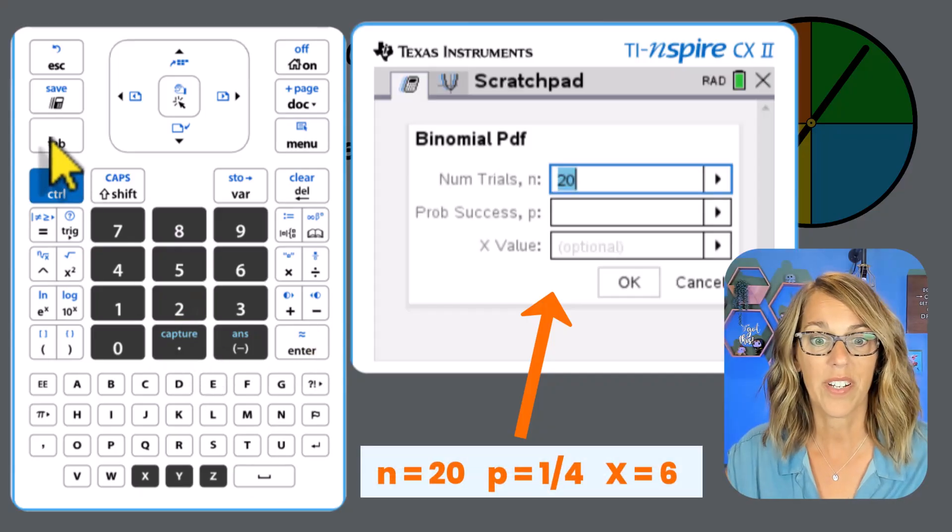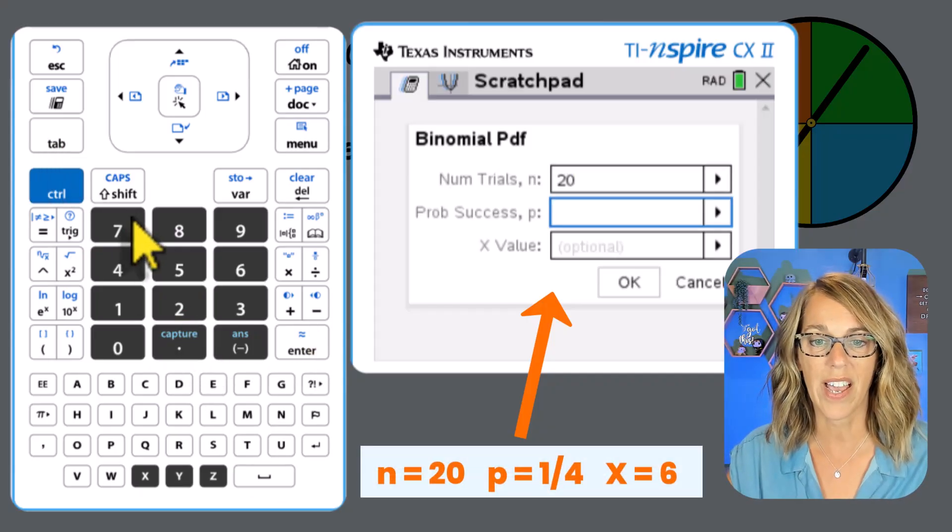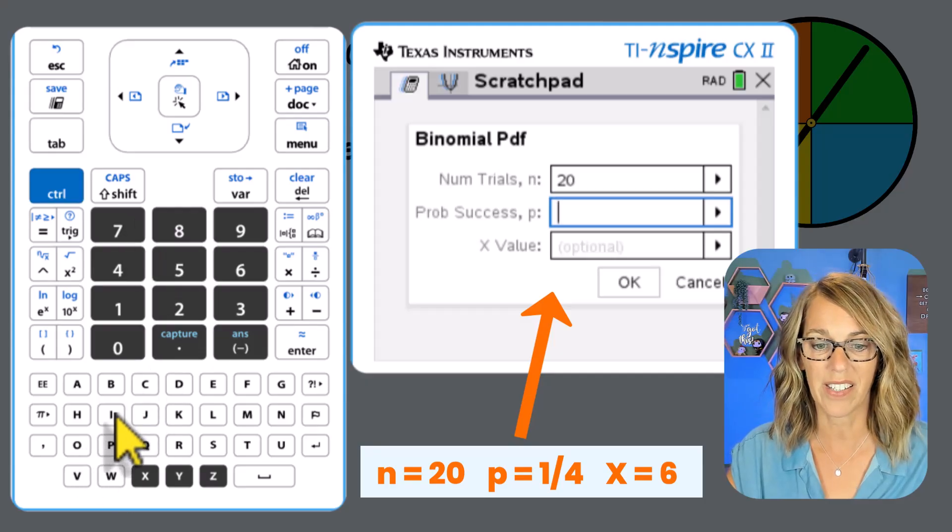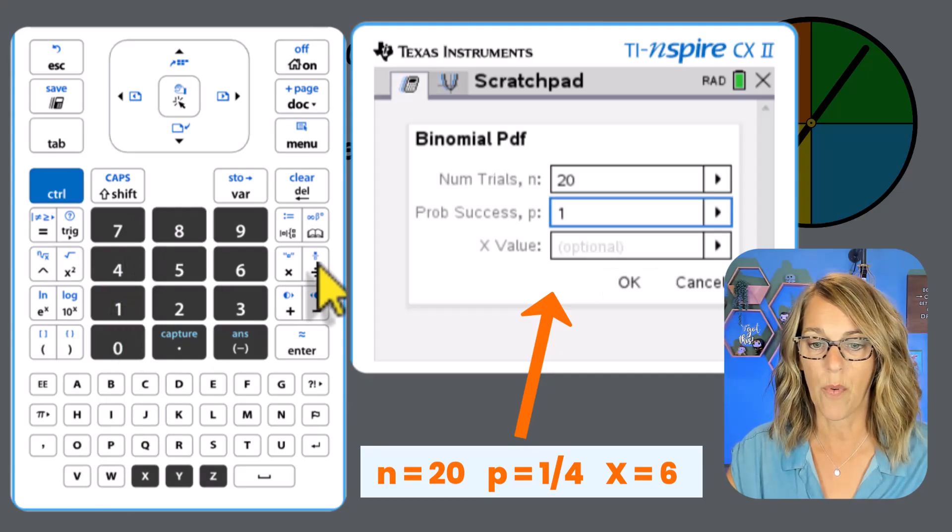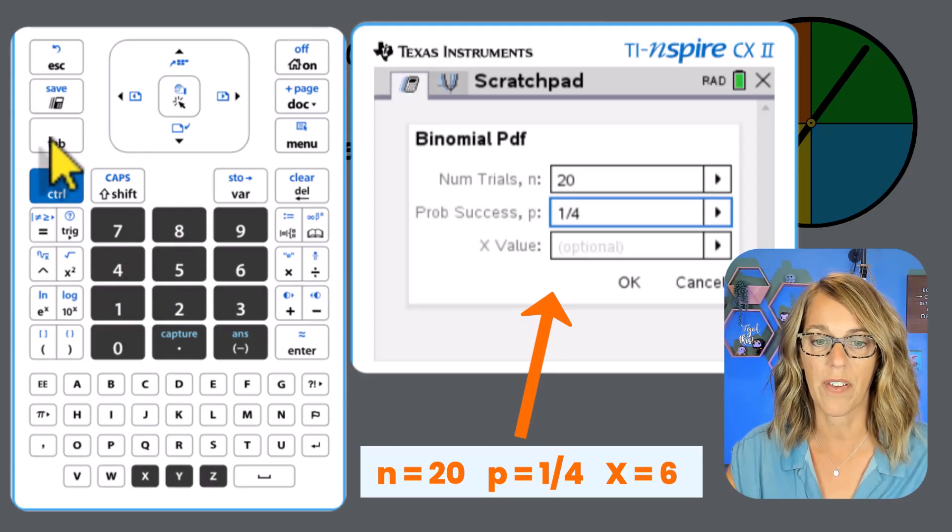It wants to know the information that we just figured out. So the number of trials, that is 20. And then you can either arrow down or tab probability of a success. That is one out of four, you can also do 0.25 here.